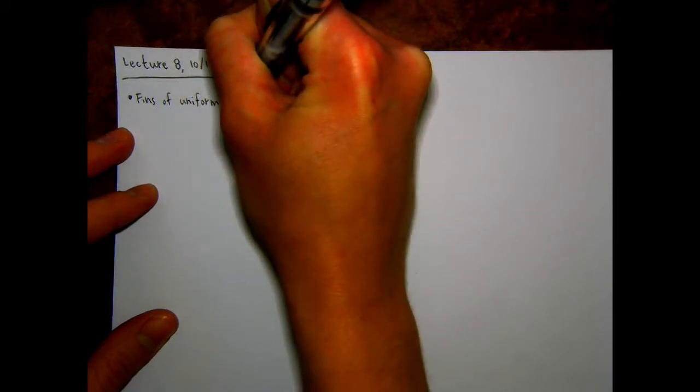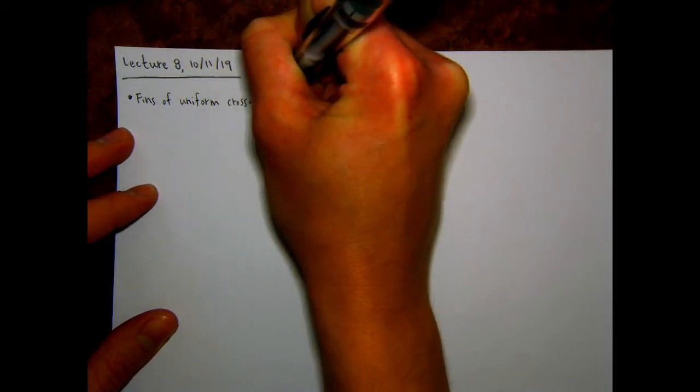Today we're going to solve that equation for some specific types of fins and specific boundary conditions. This will allow us to actually derive the equation you're using for the temperature distribution of a fin for your lab. We're going to consider fins of uniform cross-sectional area — meaning the fin does not change shape or size along its length.